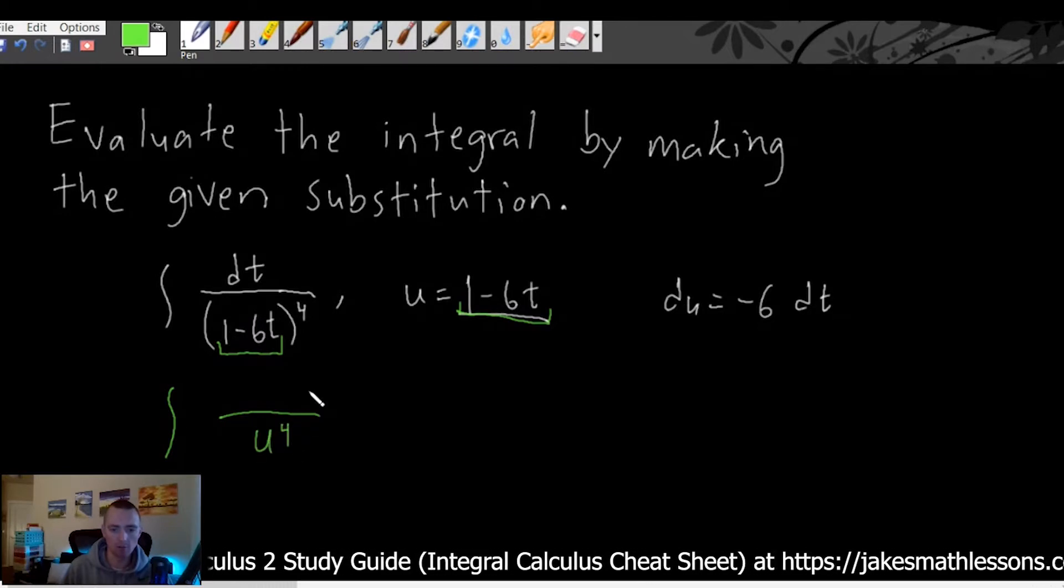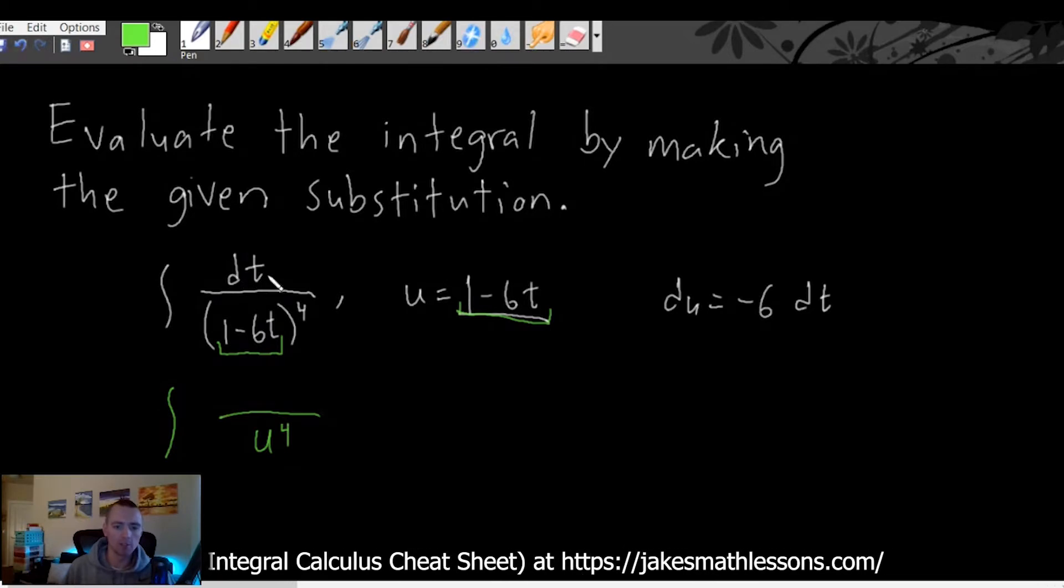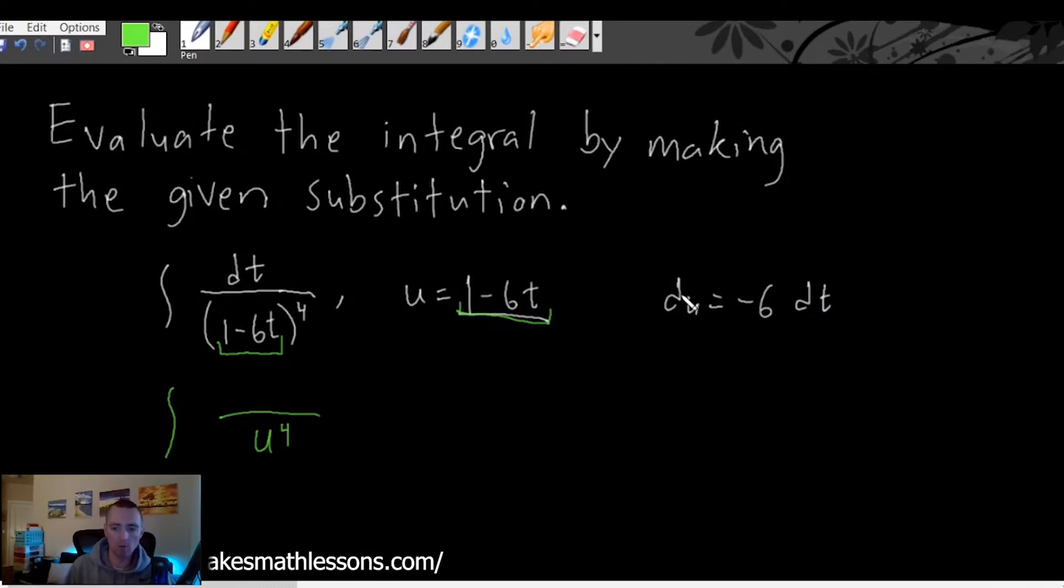So doing that is going to leave us with u to the fourth on the bottom here on the denominator. Then what we need to do is deal with our dt here because dt we also want to convert to be in terms of du.